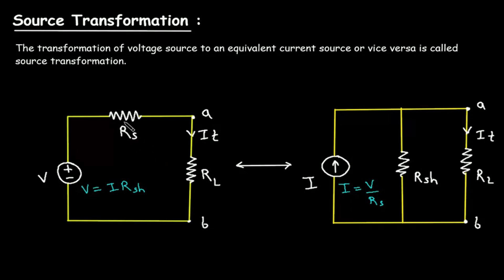Here we can see RS is the series resistance and RSH is the parallel resistance to this current source. The value of RL in both circuits is the same. Also, the value of RS and RSH is the same — we have just converted this series resistance into a parallel resistance.